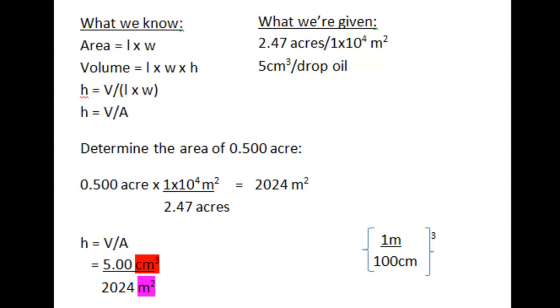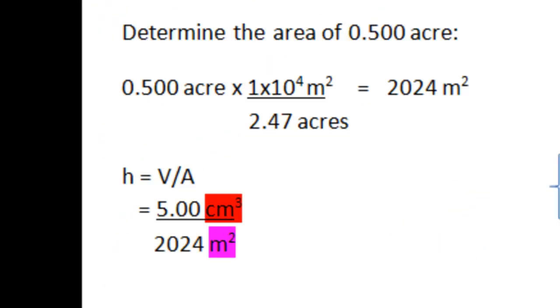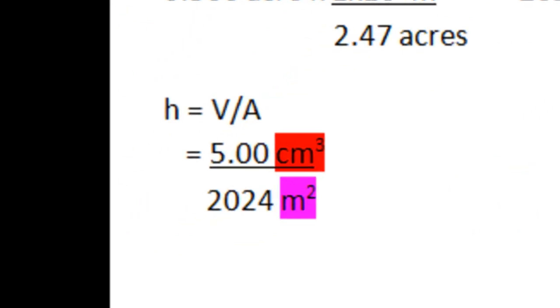The next step is to utilize this equation we set up earlier. Height is volume over area. And if I substitute the numbers that I have currently, you see we have 5 centimeters cubed, which is what is given in the problem, divided by 2,024 meters squared.